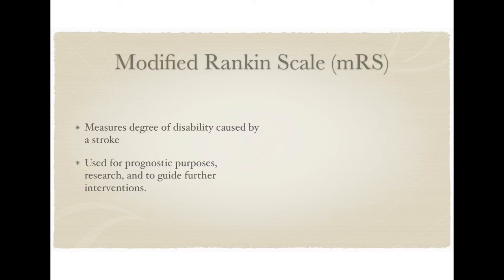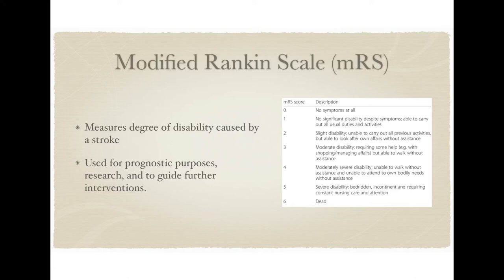Next we have the modified Rankin Scale, or MRS. This is a tool used to measure the degree of disability caused by a stroke, and we use it for prognostic purposes, research purposes, and to guide further therapy. It is a score ranging from 0 to 6, with 0 being a patient with absolutely no symptoms and 6 being a patient who does not survive the stroke. Patients with scores of 0 to 3 do fairly well and are able to live independent lives, whereas patients with scores higher than that do very poorly, requiring long-term assisted care or not surviving at all.